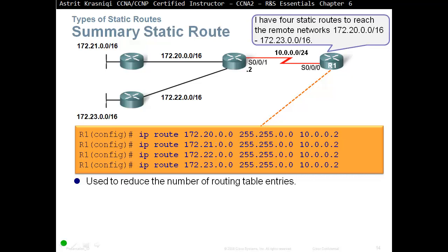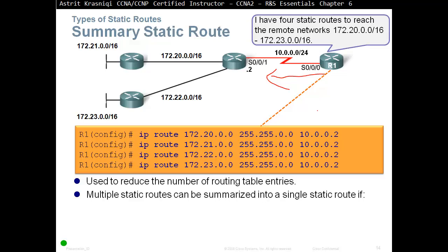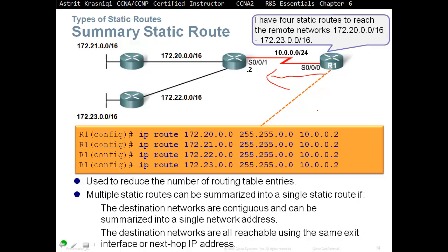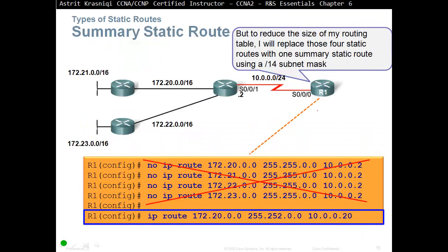A summary static route reduces the number of entries in the routing table. For example, instead of Router 1 having four separate static routes to four destinations reachable via Router 2, you can create one summary route. Multiple static routes can be summarized into a single static route if the destination networks are contiguous, can be summarized into a single network address, and are all reachable using the same exit interface or next-hop IP address.